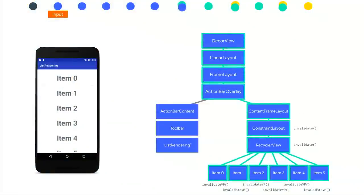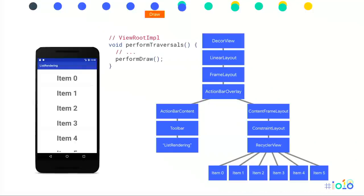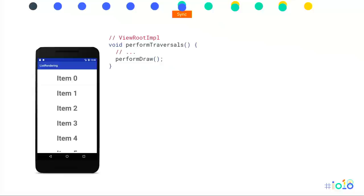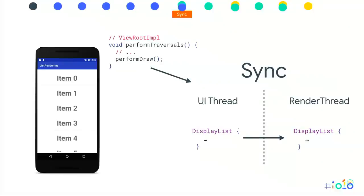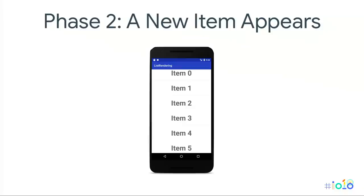Instead of invalidating a view and redrawing everything, all we do is change the translation property in the display list. invalidateViewProperty propagates all the way up the tree, but it's a much more optimal step. This ends up in scheduledTraversals, then performTraversals. But performDraw can do a much simpler version because the display list didn't actually change — we only changed display list properties inside it. So we immediately sync that information to the render thread and execute, turning it into display list ops, getting the buffer, and proceeding as before.